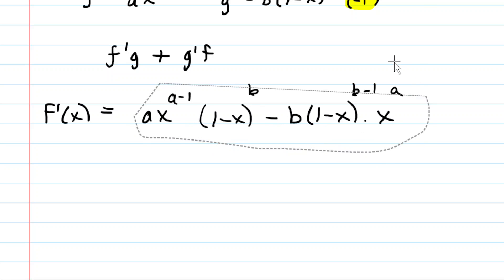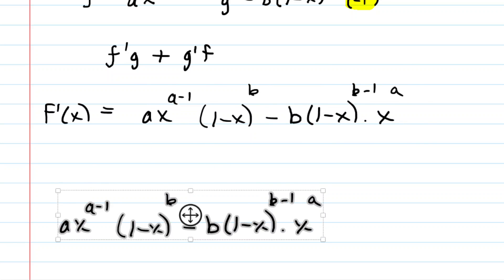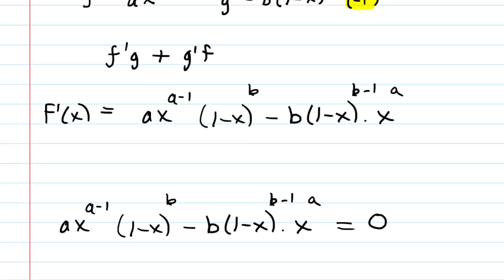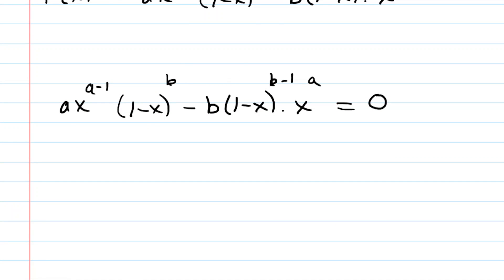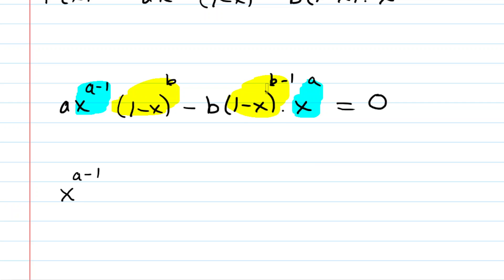Admittedly a little bit ugly. We have to take that derivative, set it equal to 0, and solve for x. Hopefully we can find a greatest common factor. Looking at the powers of x, we have x to the a minus 1 and x to the a — the rule of thumb is to factor out the smaller power, which is x to the a minus 1. Similarly for the powers of b, we have b and b minus 1, so we factor out 1 minus x to the power of b minus 1.